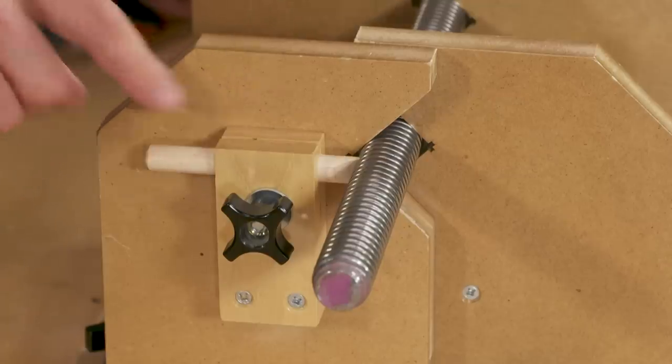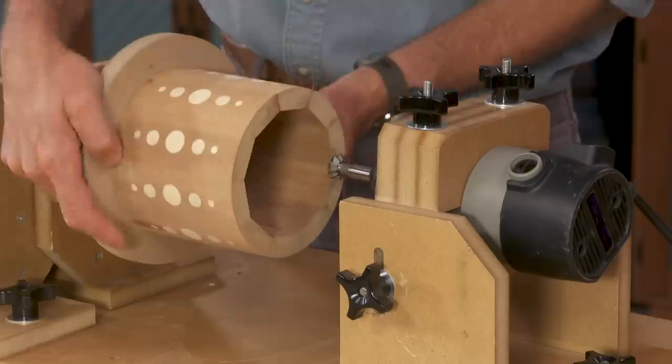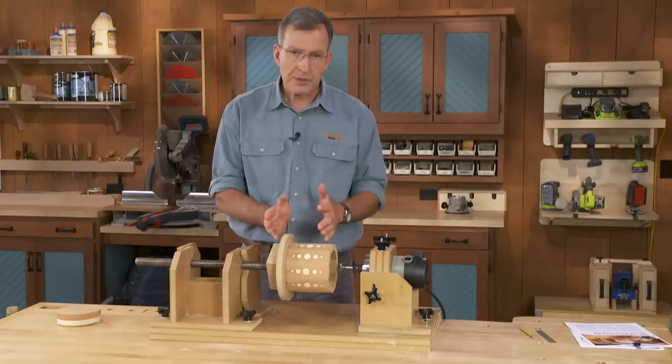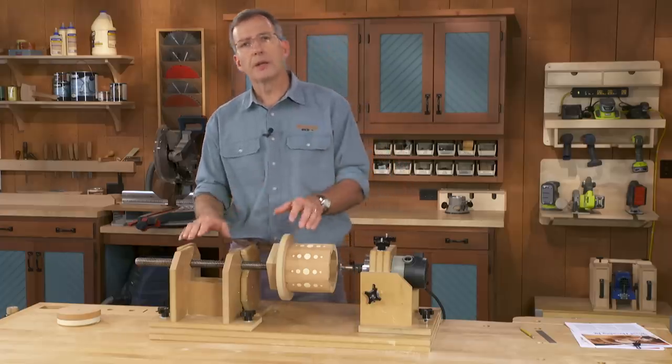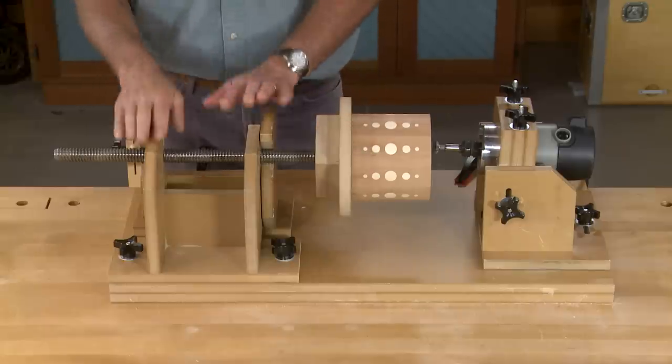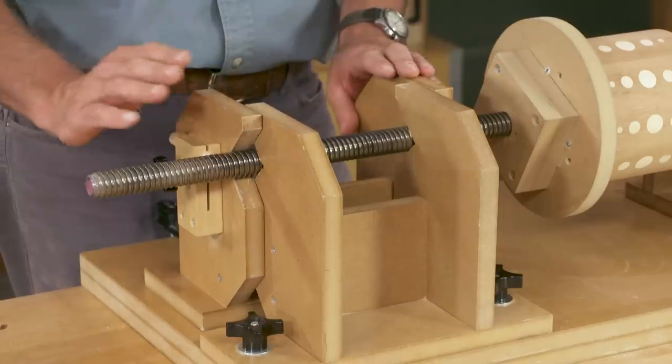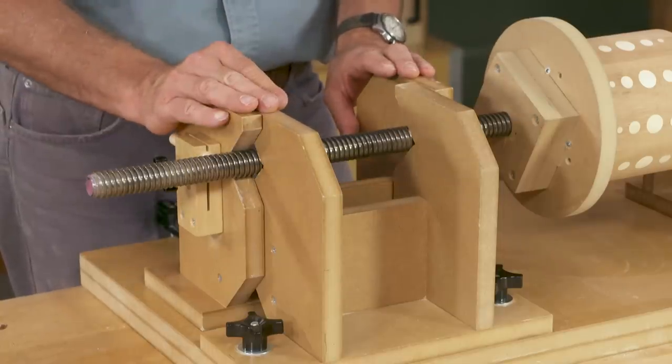And what that means is, with this piece of dowel engaging these threads, as I turn the platen and the canister, the canister is going to advance or retreat at the rate of five turns to one inch of travel. Our router jig can accommodate different sizes of threads. And right now, of course, I have it set for a one inch acme rod.